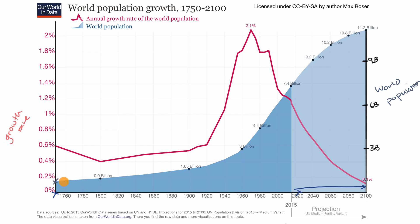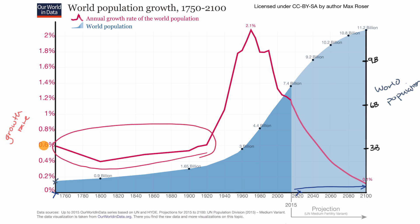But then we see something interesting happen. Over the next several centuries from 1750, it seems to start growing pretty dramatically. We can see the growth rate of population — if we look at this red curve, the growth rate of world population was around 0.6% for a while. But it looks like in the early 20th century the rate of growth starts to really increase, where it looks like around the 1970s the growth rate peaked out at 2.1%.